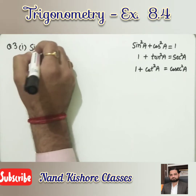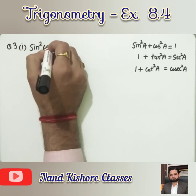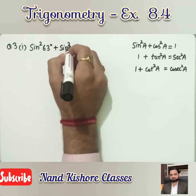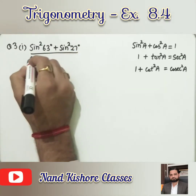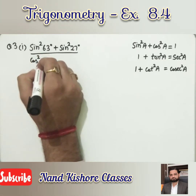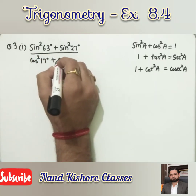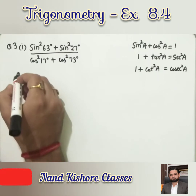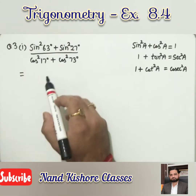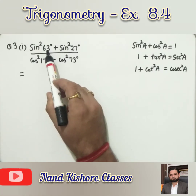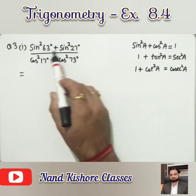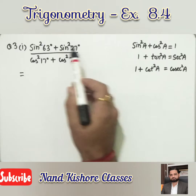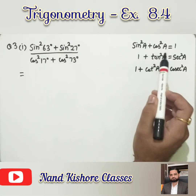First part: the statement is sin²63° + sin²27° over cos²17° + cos²73°. Now see, two formulas are being used together. I checked: 63 + 27 = 90, and when the sum is 90, that means we use our previous exercise. And when squares of trigonometric ratios are there, that means these formulas can be used.